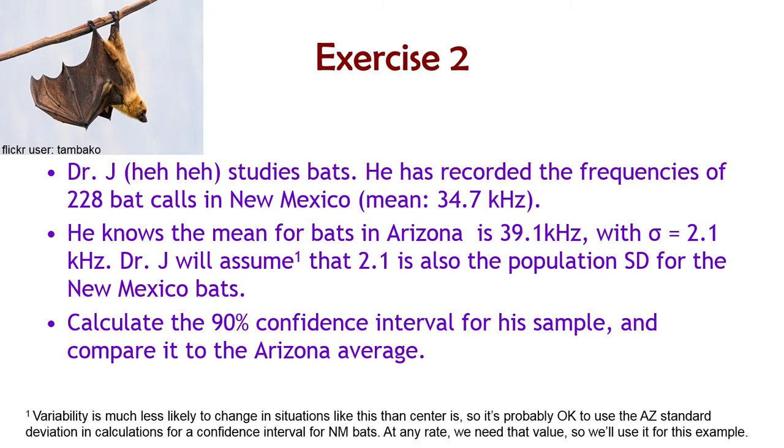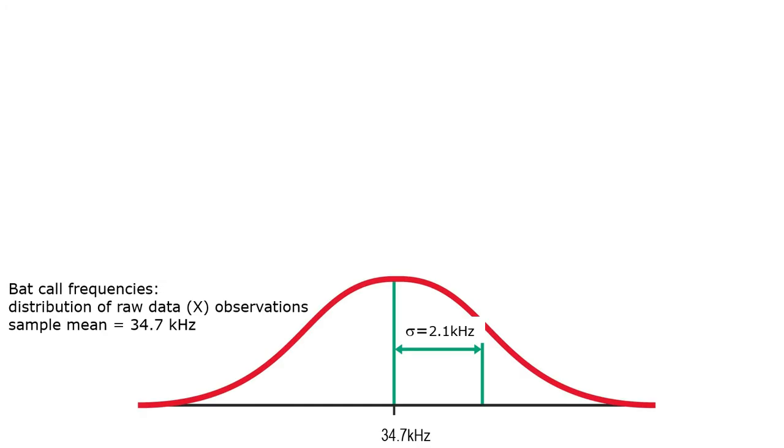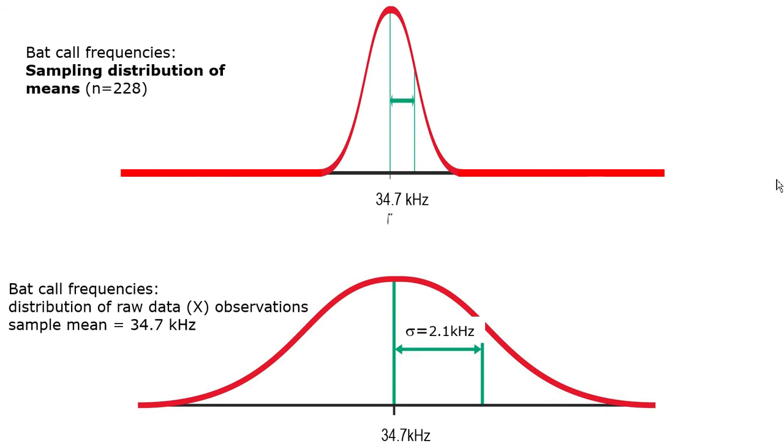Moving on to the solution here. Think about that, compare it to the Arizona average. This is kind of a hypothesis testing thing. So I'm going to draw multiple distributions here. I've got the distribution of raw scores with a standard deviation estimated of 2.1 kilohertz and a mean of 34.7, because that came from our sample. The sampling distribution of all possible sample means from sample sizes of 228 bats looks like this. The mean is the same as this mean down here.